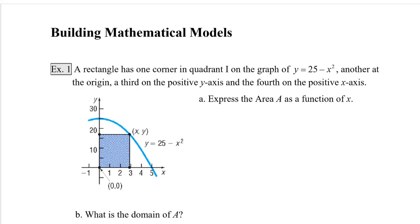Example 1. A rectangle has one corner in quadrant 1 on the graph of y equals 25 minus x squared. That's right here. Another at the origin. A third on the positive y-axis, and a fourth on the positive x-axis. And it wants us to express the area of the rectangle A as a function of x.